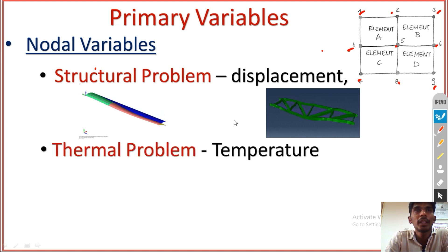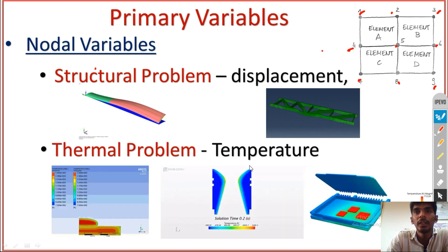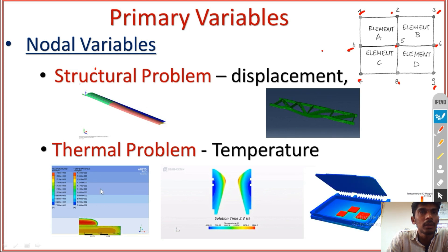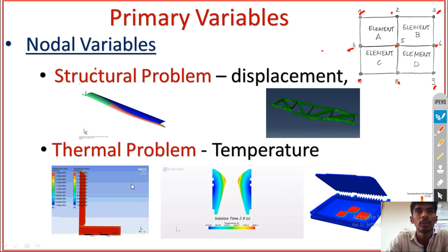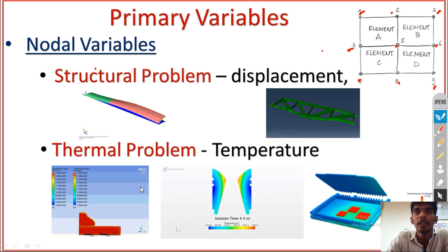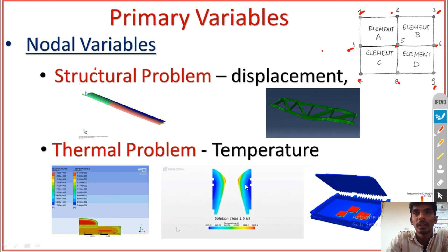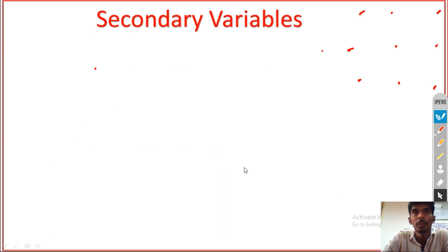In thermal problem, temperature has nodal variables. That is, primary variables at nodal points. Here you see some of the diagrams indicating temperature values at nodal point. If you solve any problem by using numerical software, it will give two major outputs. One is nodal solution and also element solution. You always remember that nodal solutions always indicate the primary variable, that means primary parameters. Here are some examples regarding the thermal problem.